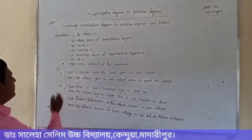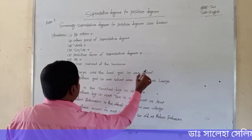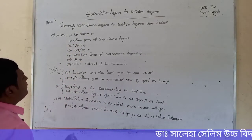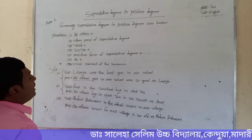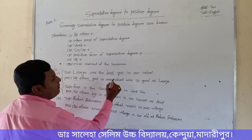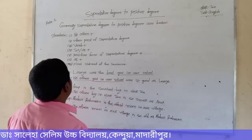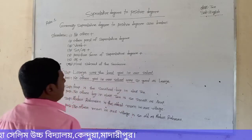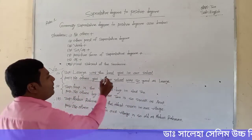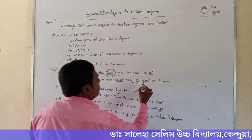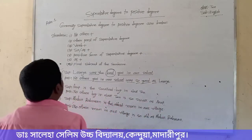Here are some examples. Number one — superlative: 'Lamia was the best girl in our school.' According to the structure, firstly we take 'no other,' then the other part of the superlative: superlative is 'best,' so other part is 'girl in our school.' Verb: 'was.' From structure, so/as — we take 'so.' Positive form of 'best' is 'good.' Then 'as,' and finally the first subject: 'Lamia.'